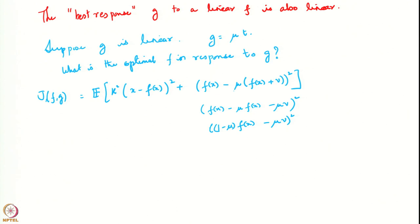What we have here is a perfect square plus another term that is also practically a perfect square. Consequently, we can complete the squares and write the cost in the following form: some constant k' outside, then something like (ax + bv - f(x))², plus additional terms which depend on x and v but not on f. This is by completing the squares.